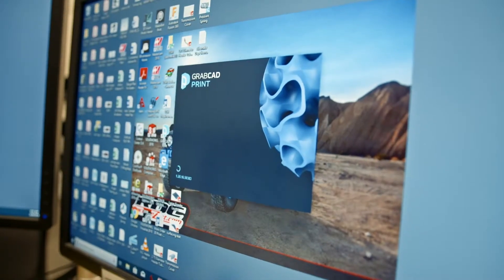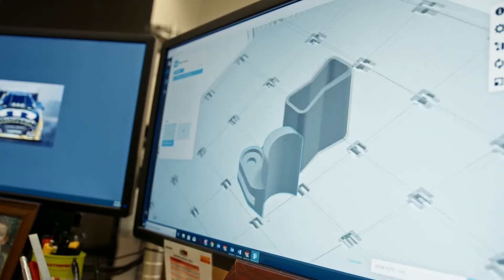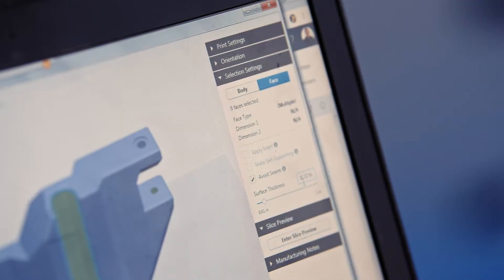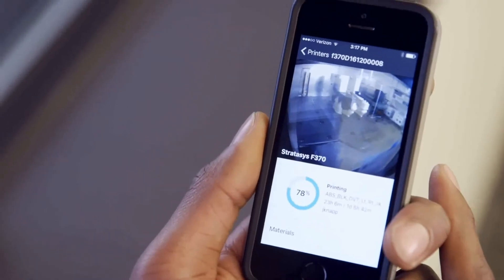GrabCAD print software speaks to the entire family of Stratasys 3D printers. It eases the workflow from CAD design to data preparation to print, and it also allows you to watch prints before they've begun printing, while they're printing, and to see whether they've finished or not.